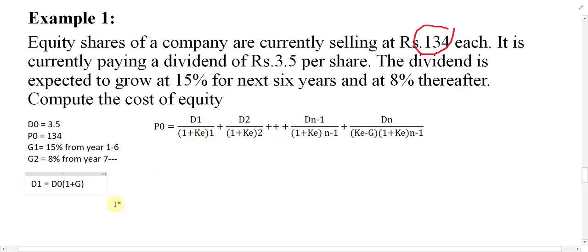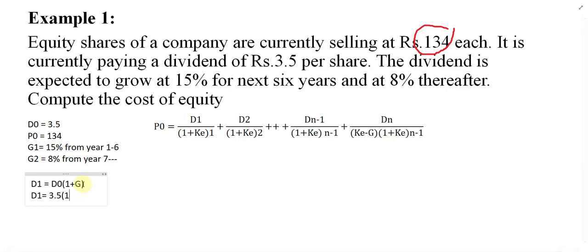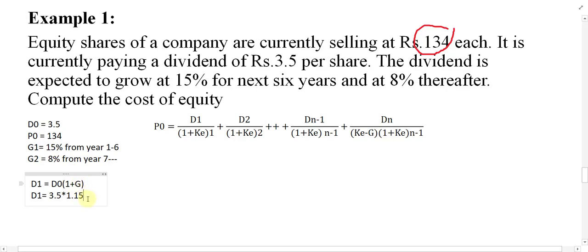Let us apply the formula. D1 = D0 × (1 + G1). D0 = 3.5, and G1 = 15% = 0.15, so 1 + 0.15 = 1.15. Therefore D1 = 3.5 × 1.15, which gives us the value of D1.